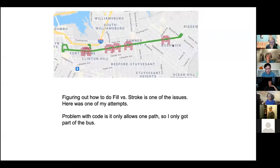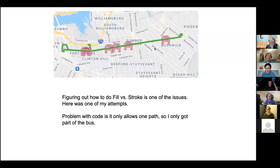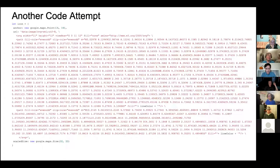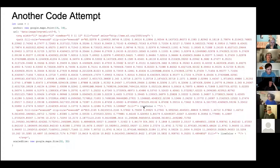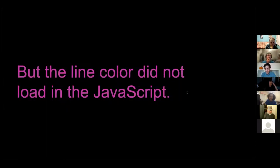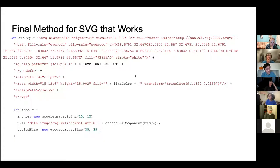With that one-path approach, I only had part of a bus. We had to figure out where to put the fill and the stroke. Then a designer sent me another one that had like four paths in it, so I knew I had to find different code. I came up with another try - the whole thing with more than one path, all in this giant JavaScript object. But I couldn't get this JavaScript to work properly that way - the color didn't load.